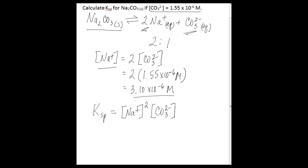So all you need to do now to find Ksp is substitute in your known concentrations. So you know that your sodium concentration is 3.10 times 10 to the negative 6, and this is squared, multiplied by the carbonate ion concentration, which you're given initially to be 1.55 times 10 to the negative 6 molar.